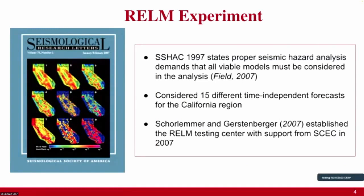Max mentioned the REALM experiment — I'm not going to spend a lot of time on this, but this is really the experiment that kicked off this community experiment idea. It arose after decisions to properly analyze all seismic hazard forecasts. In REALM, there were 15 different time-independent forecasts considered for California. It really kicked off the whole concept of evaluating probabilistic forecasts with the CSEP testing framework. If you're not familiar, check out the SRL special issue from 2007 — there's a lot of information about REALM.